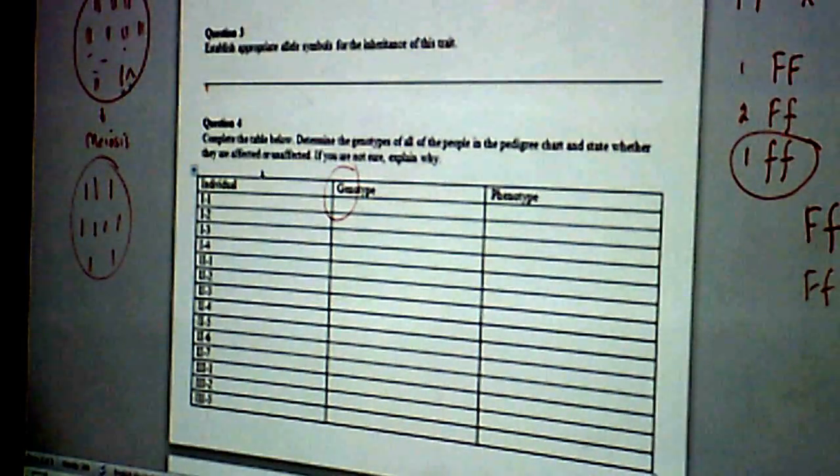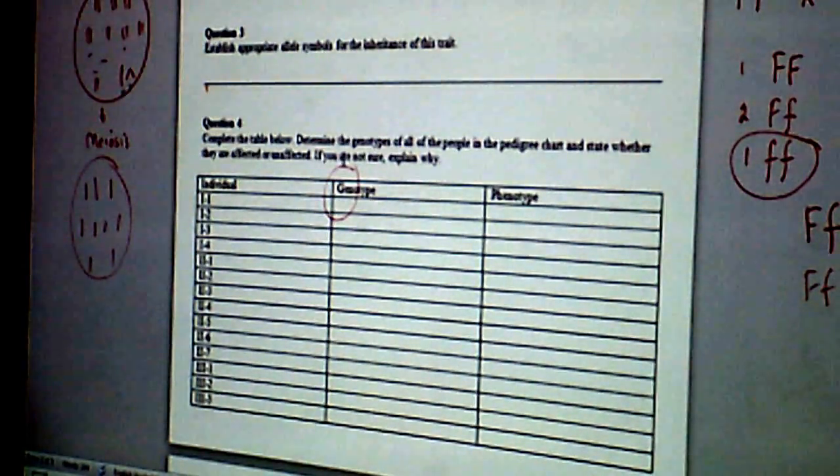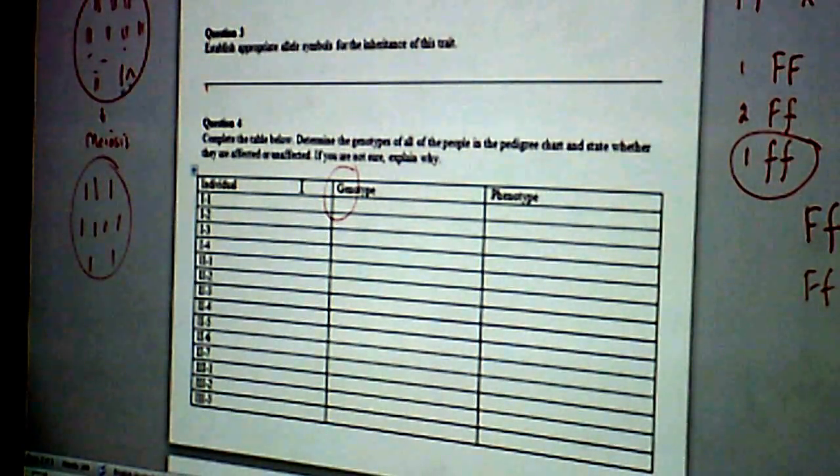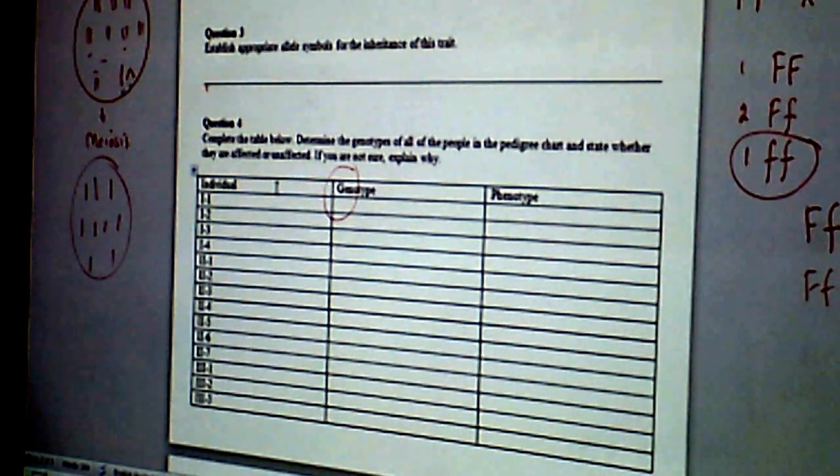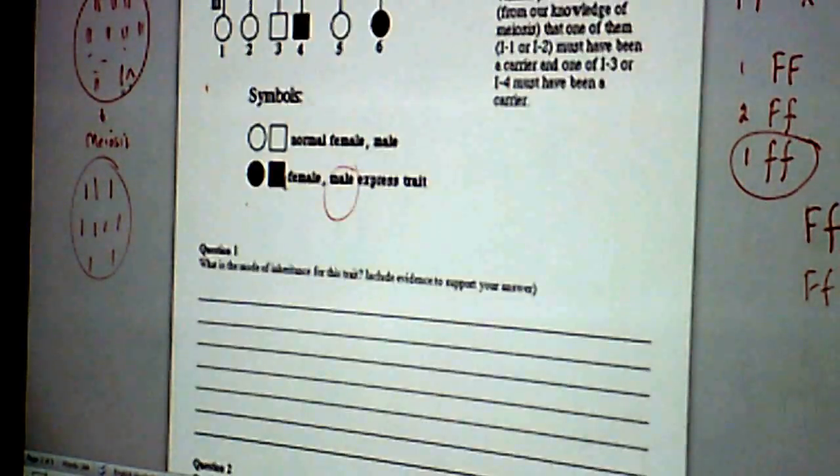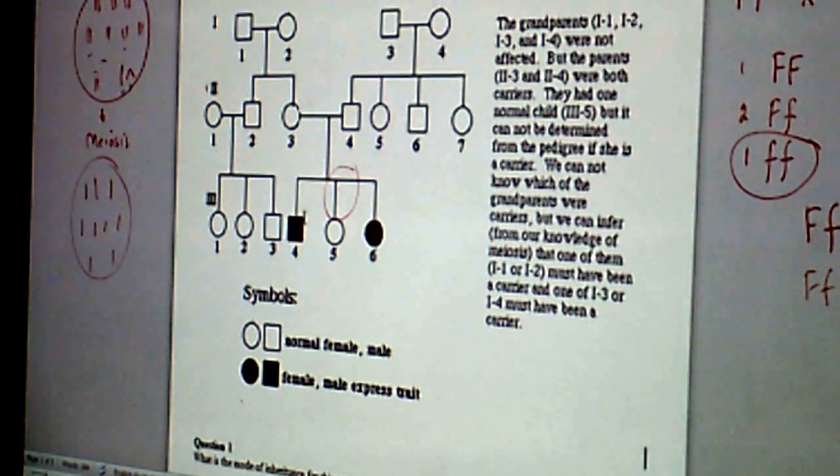Then complete the table below. Determine the genotypes of all the people in the pedigree chart and state whether they're affected or unaffected. If you're not sure, explain why. So you go back to this one, and as we did before, say for example for these two we now know. In the same way, we work out the genotype of all the persons in this one and then write it down.